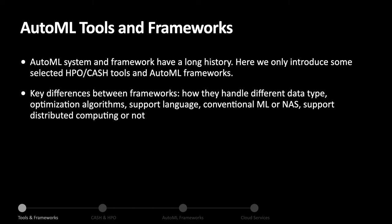AutoML systems and frameworks have a long history. Here we introduce some selected HPO, CASH tools, and AutoML frameworks. Key differences between frameworks include how they handle different data types — continuous, categorical, and discrete — the optimization algorithm used (evolutionary algorithm, reinforcement learning, PMF, or other), the supported programming language (Python, R, Scala, or Java), whether they support conventional machine learning or NAS, and whether they support multi-GPU or distributed computing.